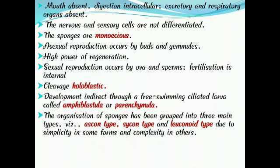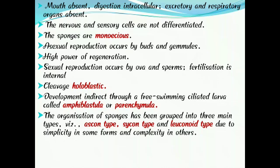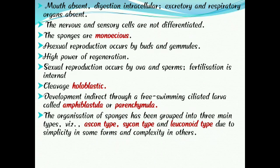In Porifera, the mouth is absent and digestion is intracellular, meaning digestion takes place within the cell. Excretory and respiratory organs are absent. The nervous and sensory cells are not differentiated — that is, Porifera lack a nervous system and a sensory system. These sponges are monoecious or hermaphroditic, meaning both male and female organs are present in a single individual.